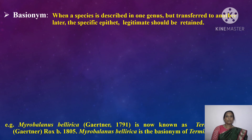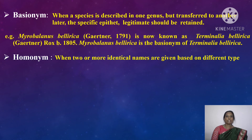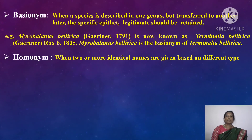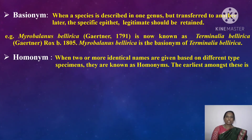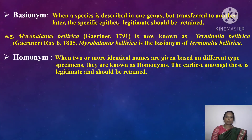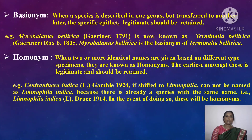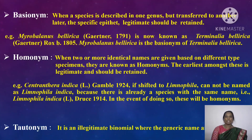Basionym. When a species is described in one genus but transferred to another, the specific epithet should be retained. For example, Myrobalanus bellarica is now known as Terminalia bellarica; Myrobalanus bellarica is the basionym of Terminalia bellarica. Homonym. When two or more identical names are given based on different type specimens, they are known as homonyms. The earliest among these is legitimate and should be retained. For example, Centranthera indica cannot be transferred to Limnophila indica because there is already a species with that name; doing so would make them homonyms.